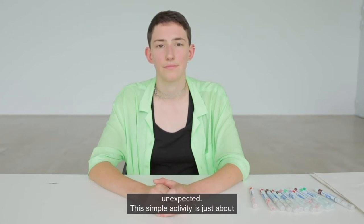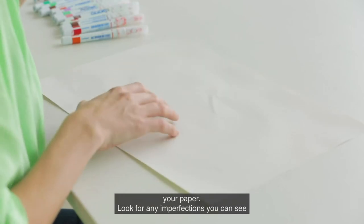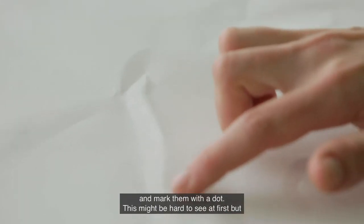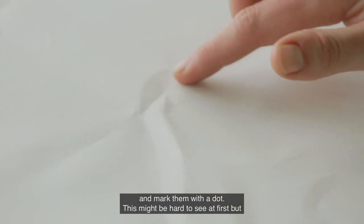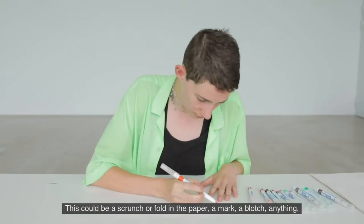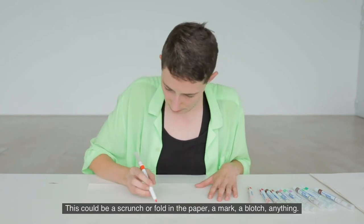This simple activity is just about joining dots. Using a piece of paper, look closely at your paper. Look for any imperfections you can see and mark them with a dot. This might be hard to see at first, but the longer you look, the more apparent they will become. This could be a scrunch or fold in the paper, a mark, a blotch, anything.